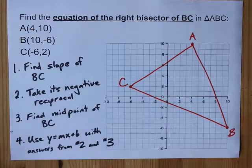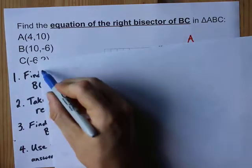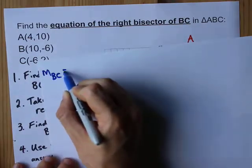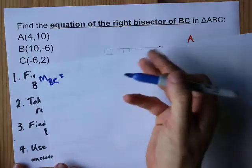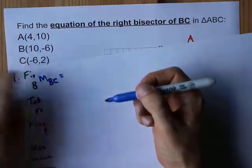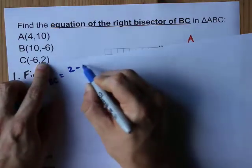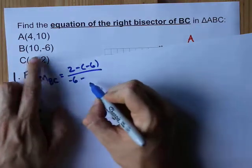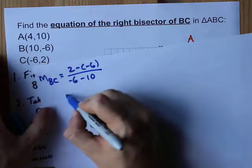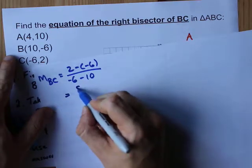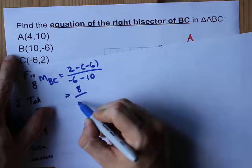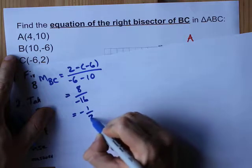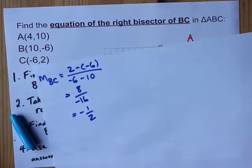Find the slope of BC. The slope between two points is y2 minus y1 over x2 minus x1. 2 minus negative 6 is 8. Negative 6 minus 10 is negative 16. I get negative 1 half. Wow that worked out really nicely.